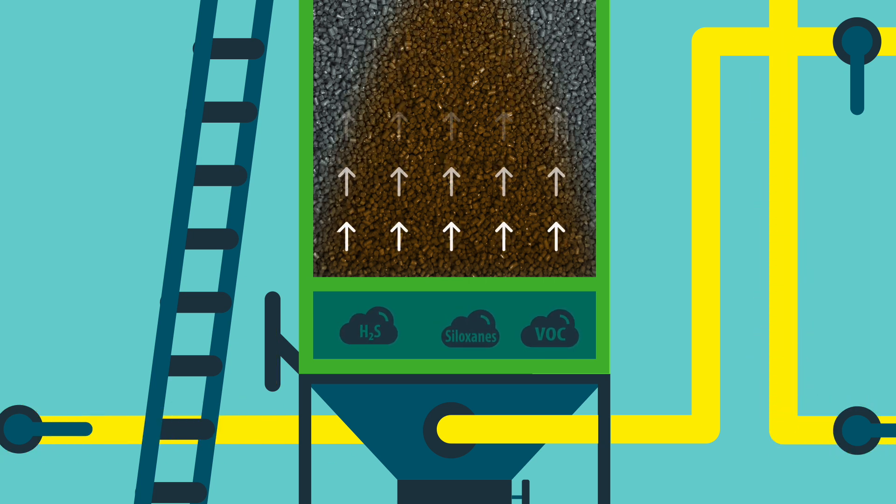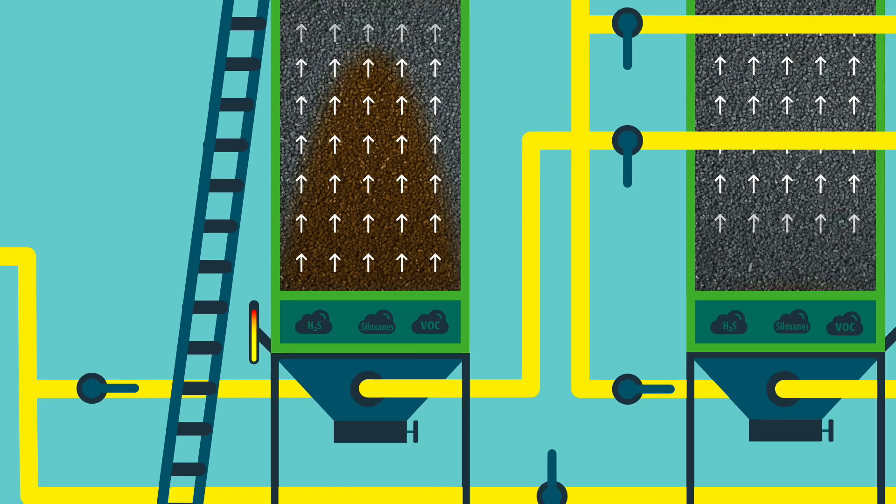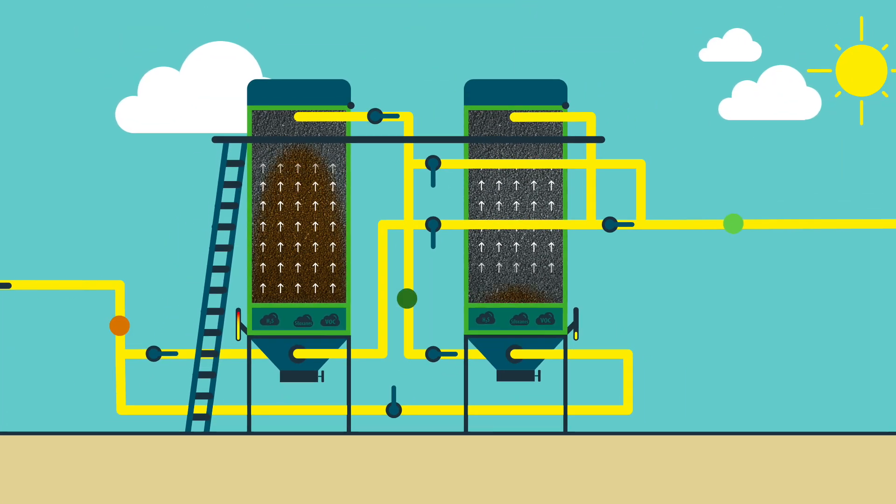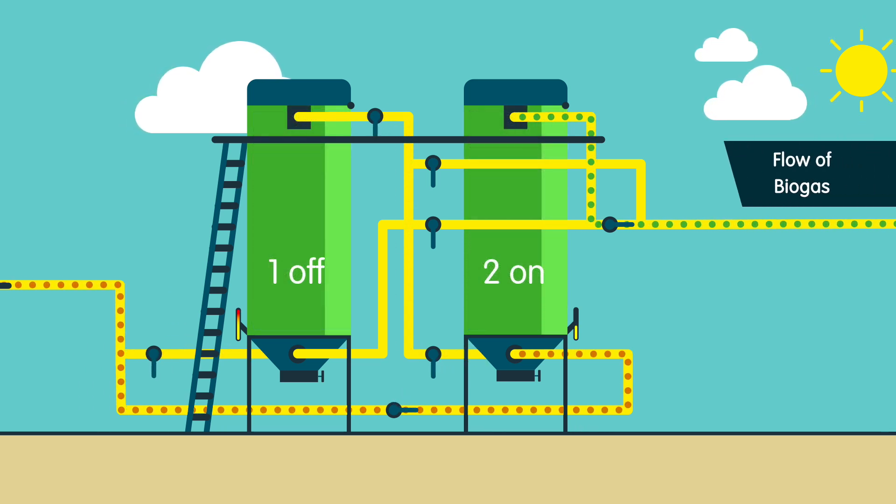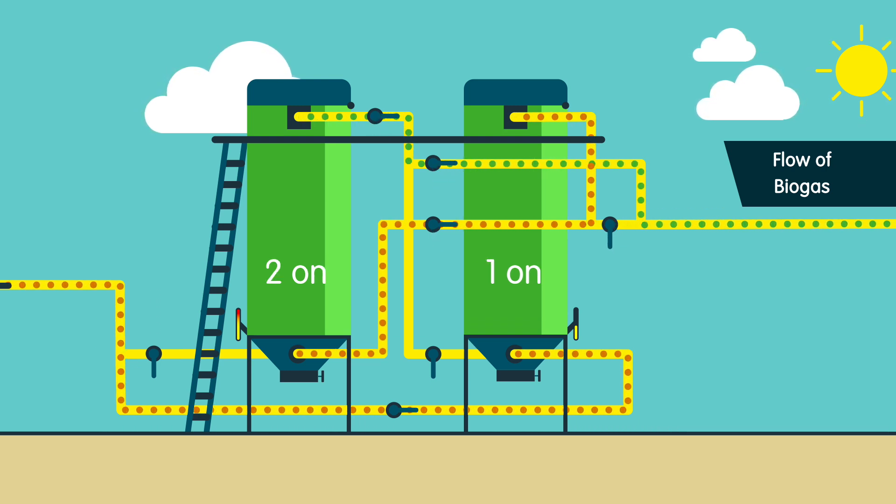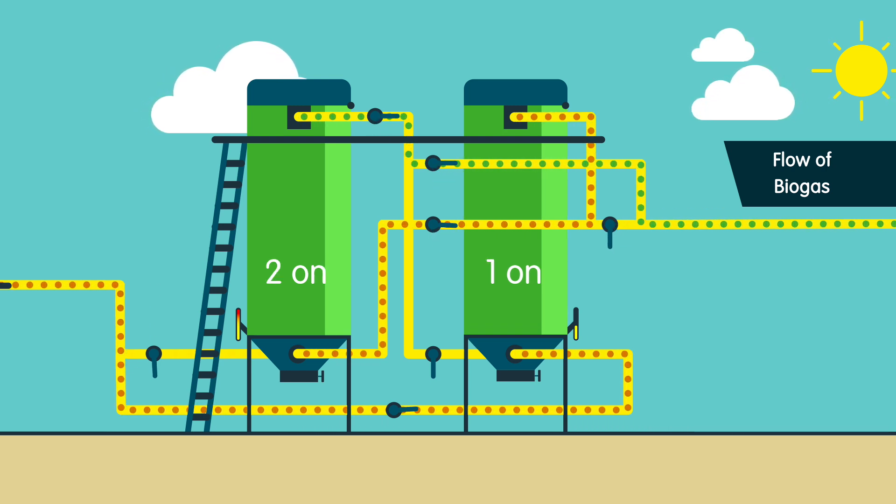Before vessel 1 reaches full saturation, vessel 2 is added so that the media in the first bed gets fully used up. After vessel 1 is fully saturated, gas flow flows only through vessel 2 to prepare for the media change in vessel 1, optimizing the media without stopping plant operation.